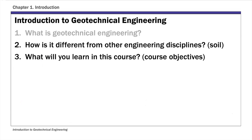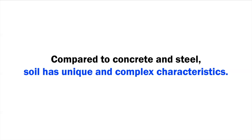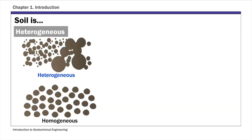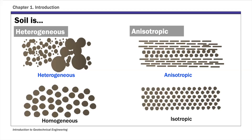The second question of today's lecture is: how is geotechnical engineering different from other civil engineering disciplines? The answer has to do with the materials we deal with, which is soil. Compared to concrete and steel, soil has some unique and complex characteristics. First, soil is a heterogeneous material, meaning the compositions and properties of soil vary from location to location. Second, soil is anisotropic — its mechanical behavior and properties are directionally dependent.